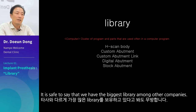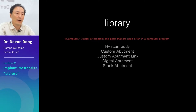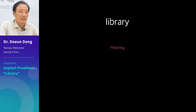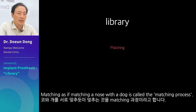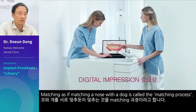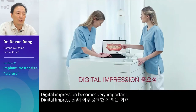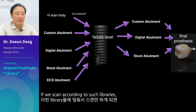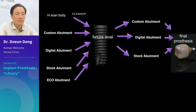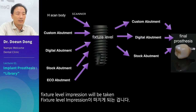It is safe to say that we have the biggest library among other companies. These libraries go through a process referred to as matching — matching a nose with a dog, for example, is called the matching process. Digital impression becomes very important. If we scan according to such libraries, a fixture level impression will be taken.